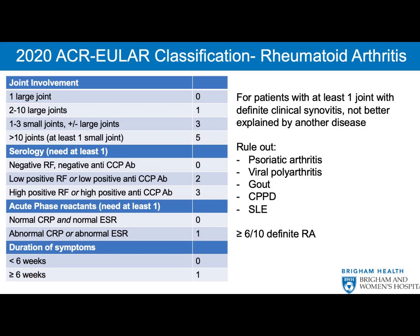Category 1 — Joint Involvement (0 to 5 points): One large joint such as knee, hip, or shoulder scores 0 points. Two to ten large joints score 1 point. One to three small joints (hand or foot) score 2 points. Four to ten small joints score 3 points. More than ten joints, including at least one small joint, score 5 points.